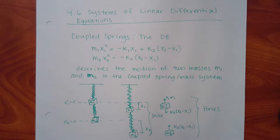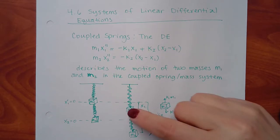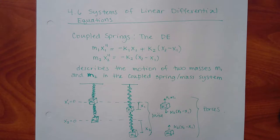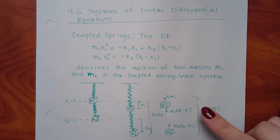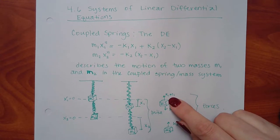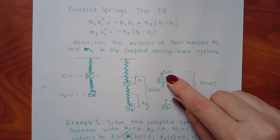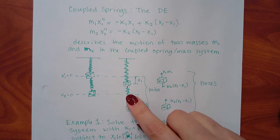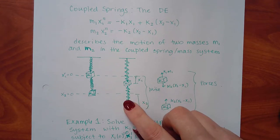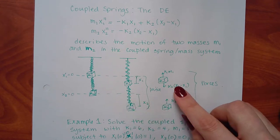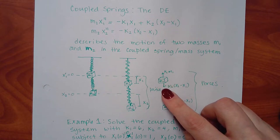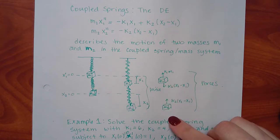We're going to try this again. I'm not going to go back and re-explain the whole spring situation, but essentially you've got this spring trying to condense itself to its natural state. So you have that force applying on M1, and you've got this spring also trying to go to its natural state — so you've got a force pulling down on M1 and pulling up on M2.